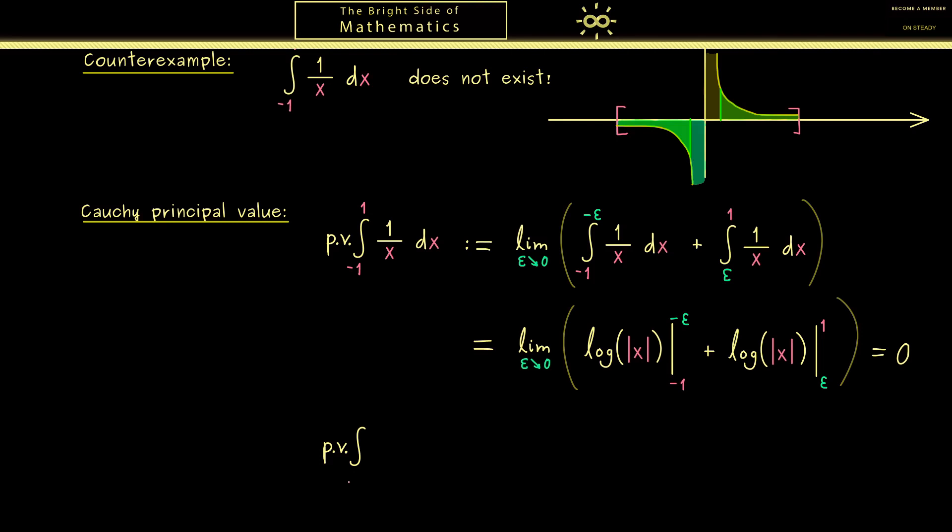Now in addition, we can also define a Cauchy principal value for an integral from minus infinity to plus infinity. And indeed the simplest example we can choose would be the function f is equal to x. Of course, the improper Riemann integral of this function cannot exist. However, as before, if we do the limit in a symmetric way we get out a result. So you see we do a symmetric integration around 0, and then we send a to infinity. And of course in this case we immediately see that the result has to be 0.